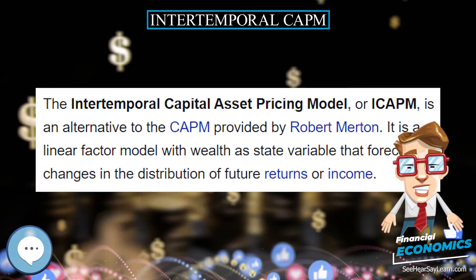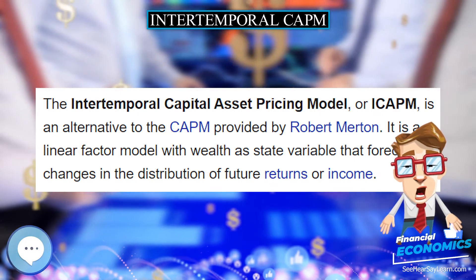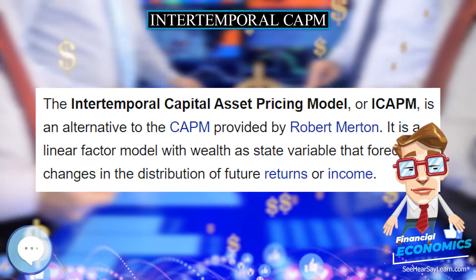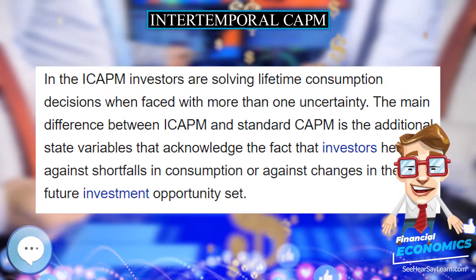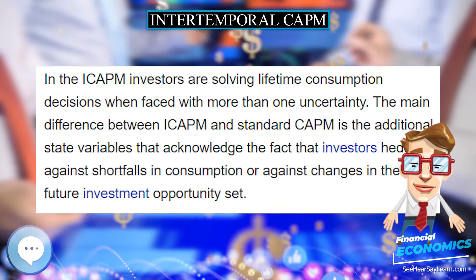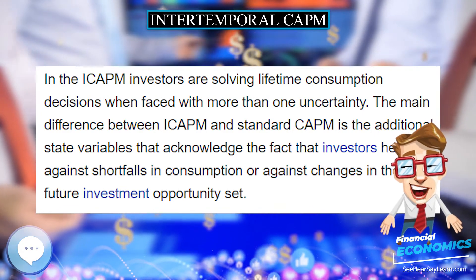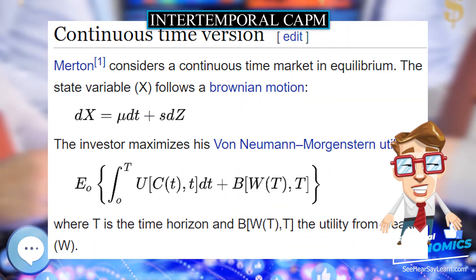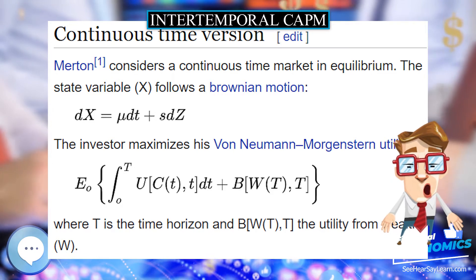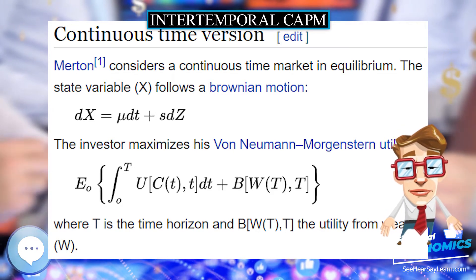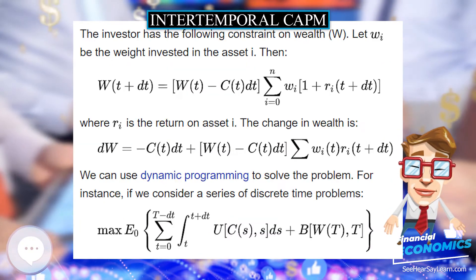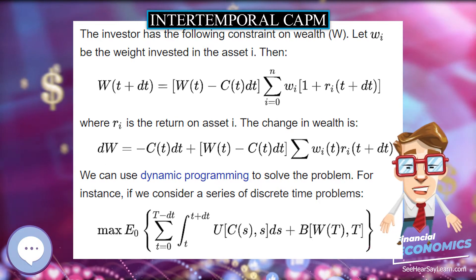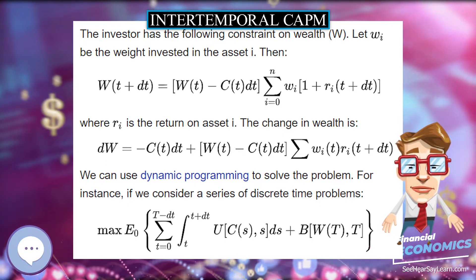In the continuous time version, Merton considers a continuous time market in equilibrium. The state variable X follows a Brownian motion. The investor maximizes his von Neumann-Morgenstern utility, where T is the time horizon and B is the utility from wealth W.